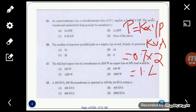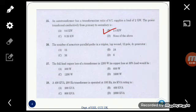Then the number of armature parallel paths in a triplex lap wound 12 pole DC generator is? We know that for a simplex lap wound generator, the number of parallel paths will be equal to number of poles. And for a duplex lap wound generator, the number of parallel paths will be equal to number of poles × 2, that is 12 × 2 = 24. And for a triplex one, it is equal to 12 × 3 = 36. So the answer is option C, 36.